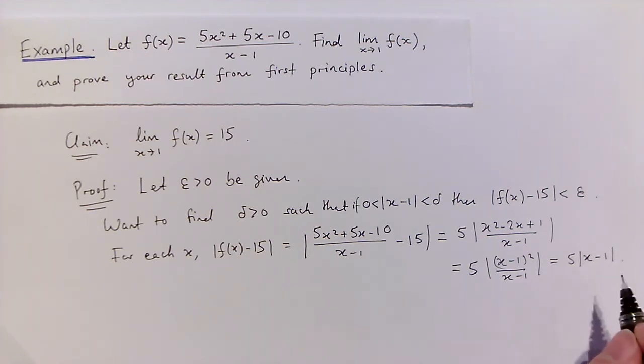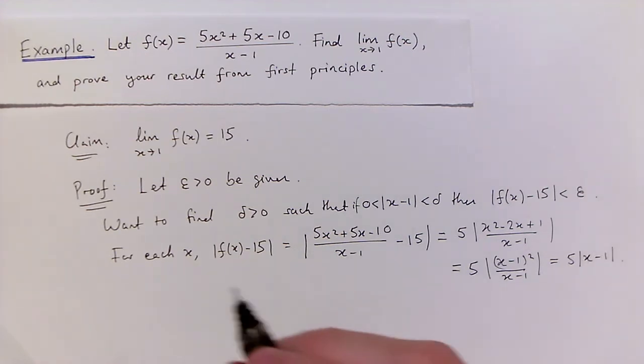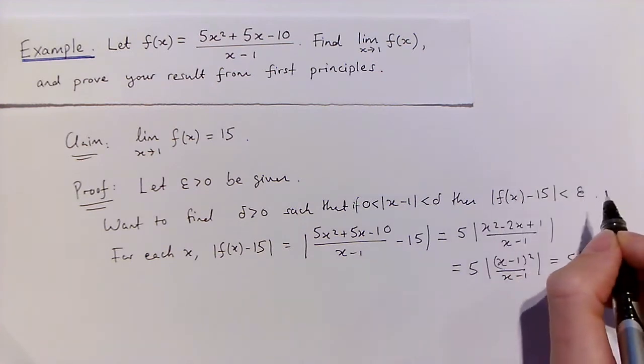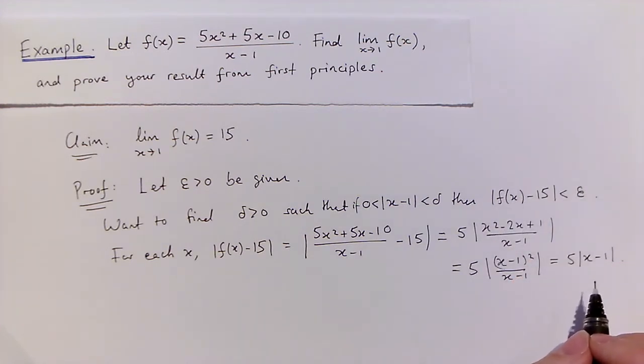which simplifies even further to 5 times the distance between x and 1. And remember, our aim is to make this less than epsilon. But it's clear that we can make this smaller than epsilon. For example, we can just choose x to be close enough to 1 that this quantity, the modulus of x minus 1, is smaller than epsilon over 5.